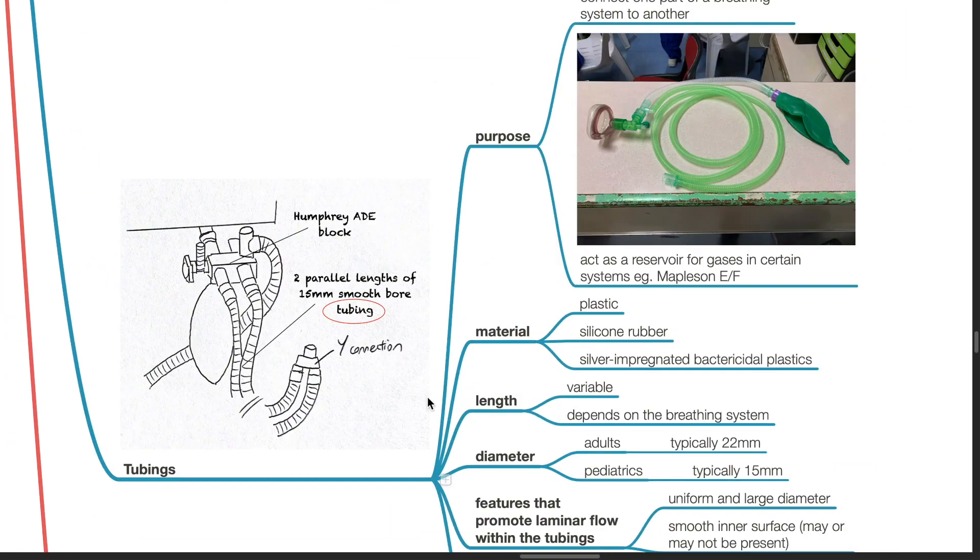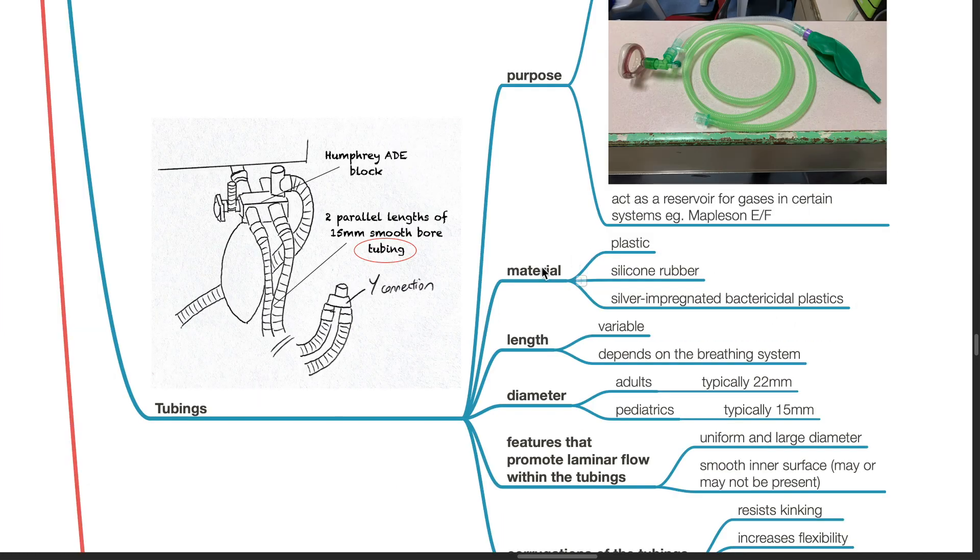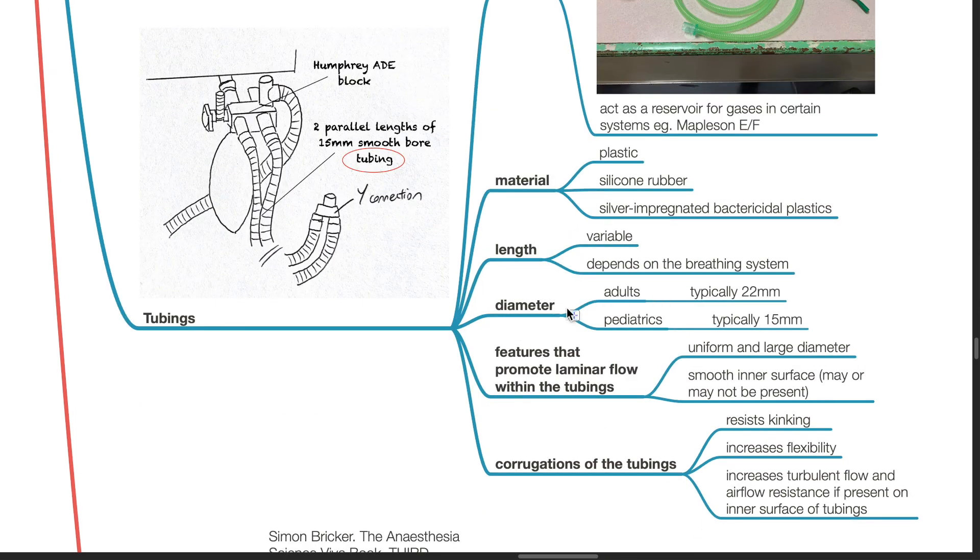Tubings. They connect one part of a breathing system to another and act as a reservoir for gases in certain systems such as the Mapleson E or F system. It is made of plastic silicone rubber or silver impregnated bactericidal plastics. The length is variable and depends on the breathing system. The typical adult diameter is 22 mm and for pediatrics it is typically 15 mm.